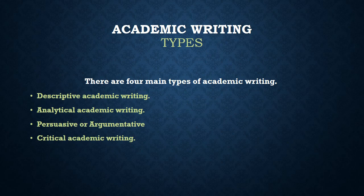There are four main types of academic writing. There are many more, but basically I am going to discuss the four main types. The first is descriptive academic writing, the second is analytical academic writing, the third is persuasive or argumentative academic writing, and the fourth is critical academic writing.